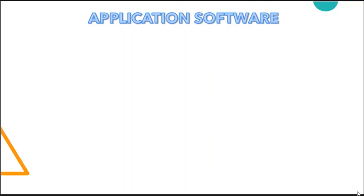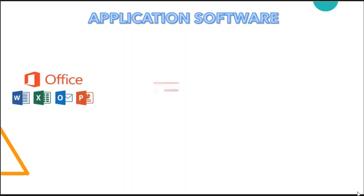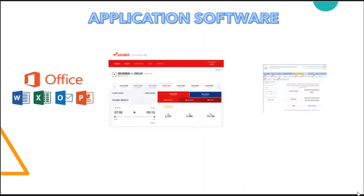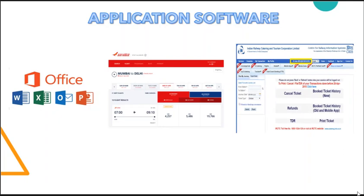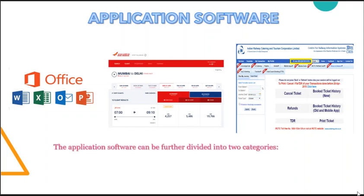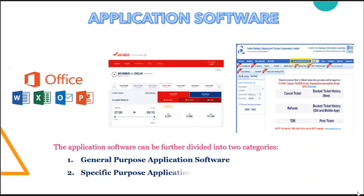Now let's understand what is application software. Application software are sets of programs developed by programmers in order to perform specific types of jobs — like beautifying documents, doing calculations, arranging data in an organized manner, and making airline or railway reservation systems. The software that enables users to accomplish their required task is known as application software. Application software is a type of computer program that performs a specific personal, educational, and business function. Each program is designed to assist the user with a particular process, which may be related to productivity, creativity, communication, or entertainment. Application software can be further divided into two categories: general purpose application software and specific purpose application software.